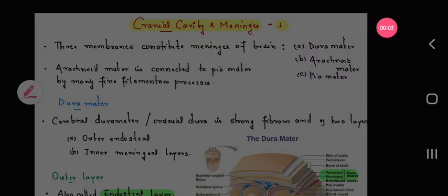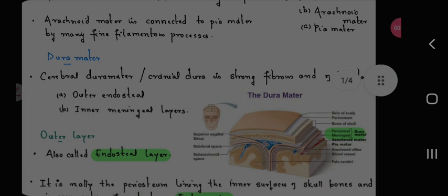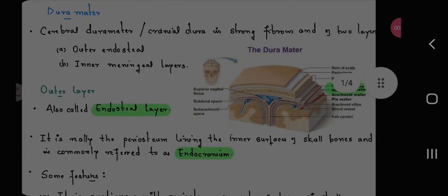Cranial cavity and meninges. Three membranes constitute meninges of brain: dura matter, arachnoid matter, and pia matter. Arachnoid matter is connected to pia matter by many fine filamentous processes. Dura matter: cerebral dura matter or cranial dura is strong fibrous.